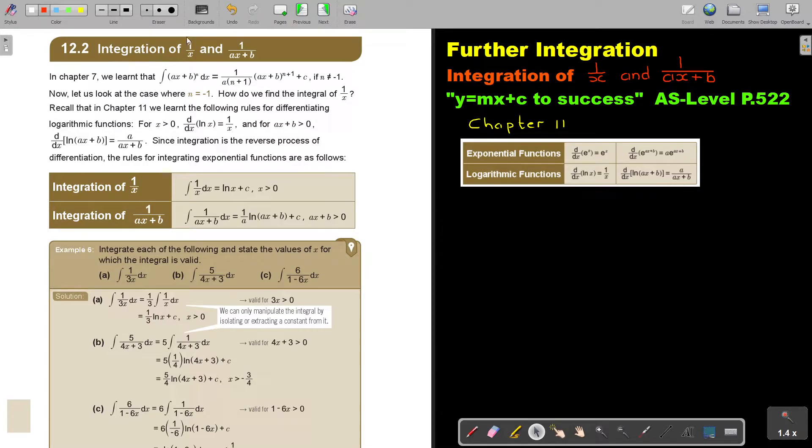Integration of 1 over x and 1 over ax plus b. So in chapter 7, we learned that ax plus b to the power n is 1 over a times n plus 1. We take that n, add 1 and multiply it with 1 over what stands in front of x. Then we say ax plus b and we add the exponent there, n plus 1 plus c. And n was not negative 1.